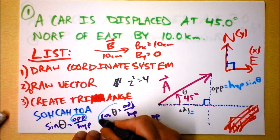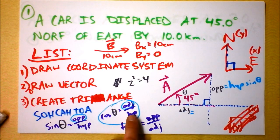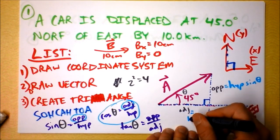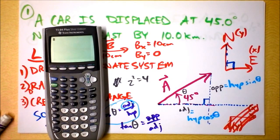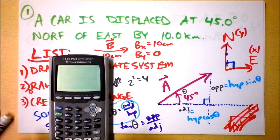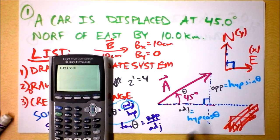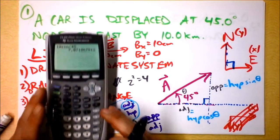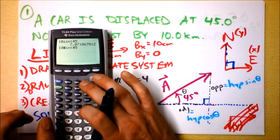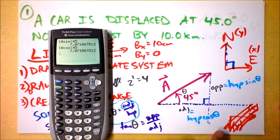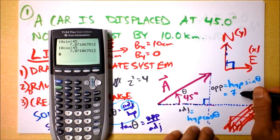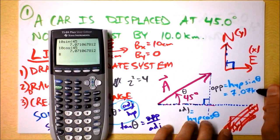Now I'll plug into my calculator. The hypotenuse's length is 10.0 kilometers. I calculate 10 times sine of 45, then use second-entry to get it back and change sine to cosine for the other component. My calculator gives me 7.07 kilometers for the first result.